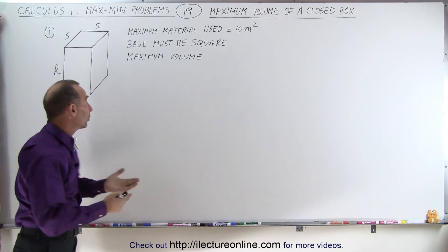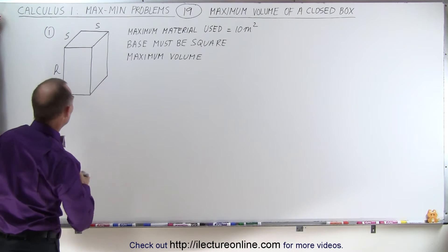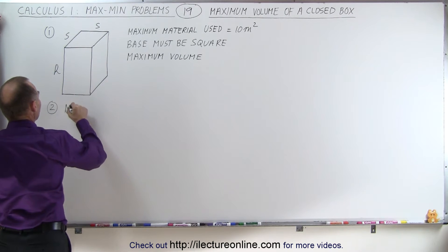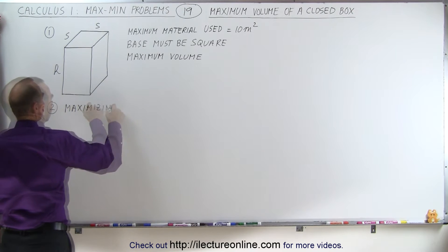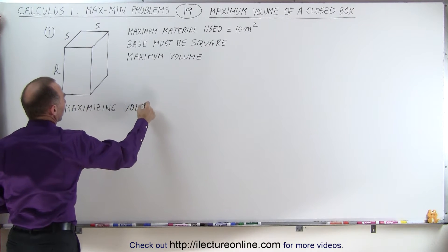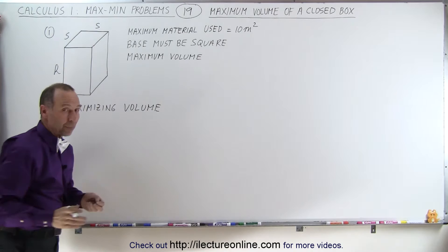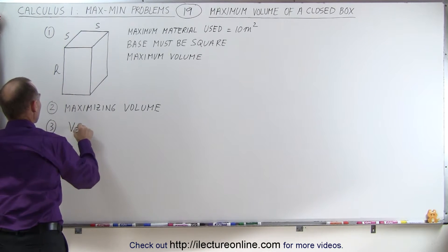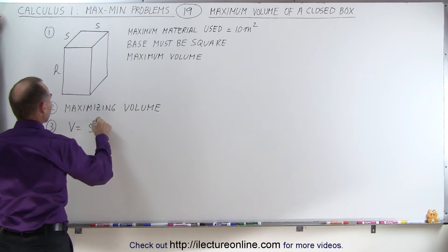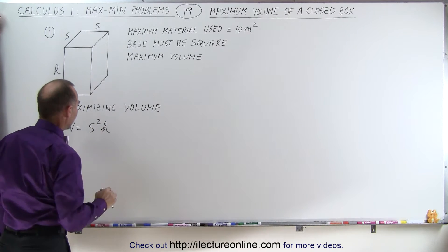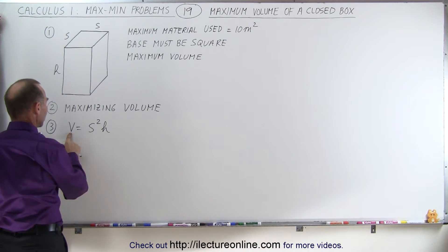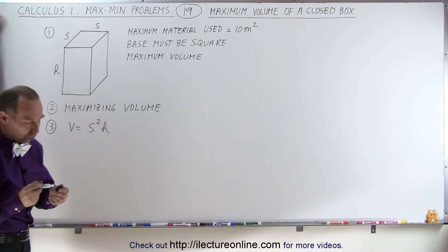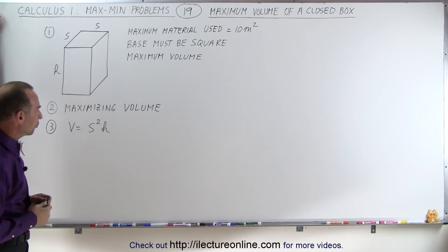Step one, we draw a box. Step two, we determine what's being maximized — in this case, we're maximizing the volume of the box, which means we need to come up with an equation. Step three, the volume will equal the area of the base times the height. The volume is a function of two variables, both unknown, so we're going to need a constraint to eliminate one of them.